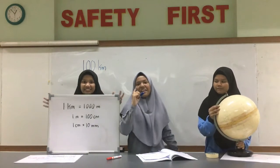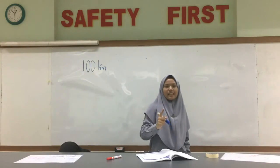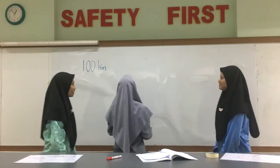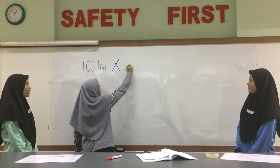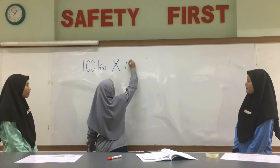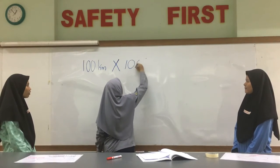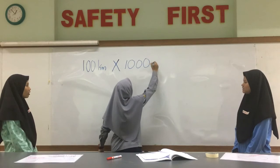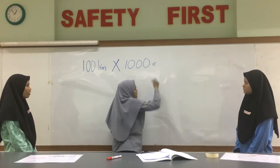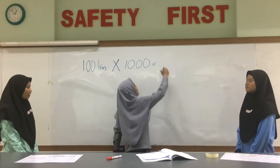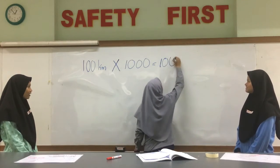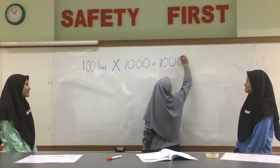See? I think I know the answer. I think I know how to solve it. 100 km multiplied by 1000 — so the answer would be 100,000 meters.